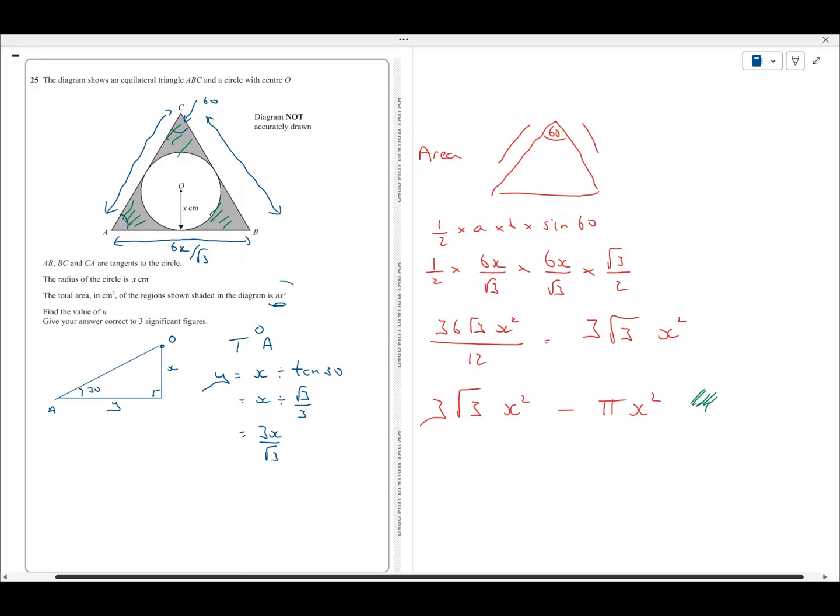And remember, I just need to know how many x squareds that is. So, I'm going to factorise this. How many x squareds is it all together? Well, it's 3 root 3 minus pi. That's how many x squareds it is. So, that's what n is. n is this.